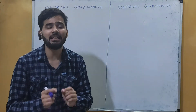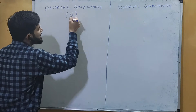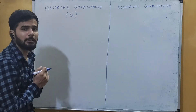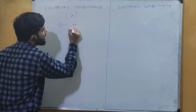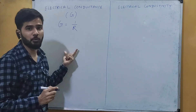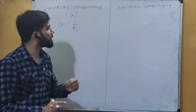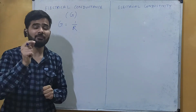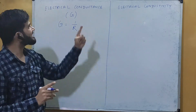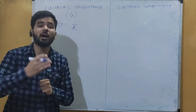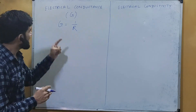Electrical conductance is the reciprocal of resistance. It is represented by capital G, so we write G = 1/R. Resistance opposes the flow of current, whereas conductance is the property to allow the flow of current.